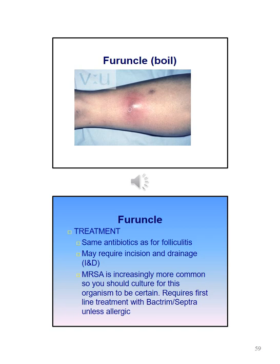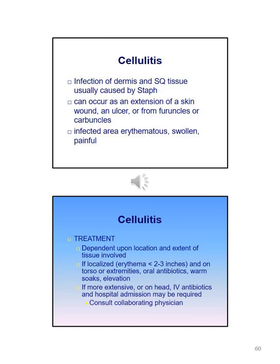Antibiotic treatment for suspected or confirmed MRSA requires first-line treatment with Bactrim, unless they are allergic. Cellulitis is an infection of the dermis and subcutaneous tissue usually caused by Staph. It can occur as an extension of a skin wound, ulcer, or from furuncles or carbuncles. The infected area is erythematous, swollen, and painful. Treatment depends on location and extent. If localized on the torso or extremities, oral antibiotics, warm soaks, and elevation may be sufficient. If more extensive or on the head, IV antibiotics and possible hospital admission may be needed.